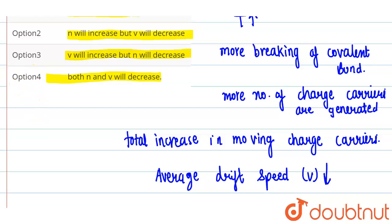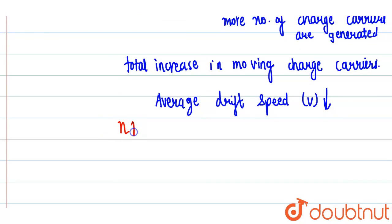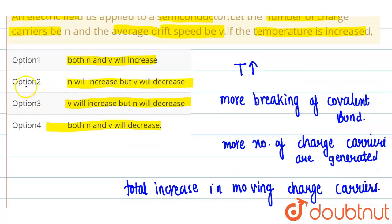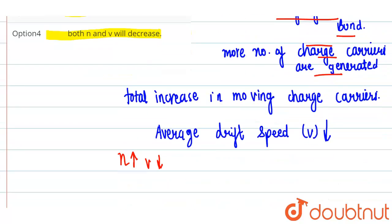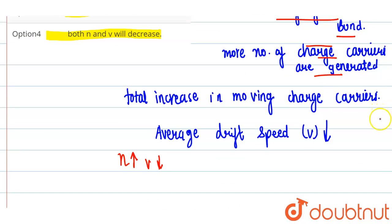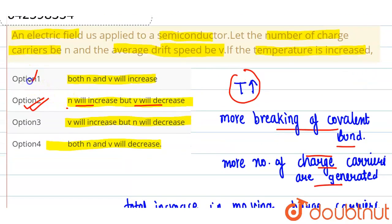Since the number of charge carriers n will increase but the drift velocity v will decrease, the correct option is 2: n will increase and v will decrease. n increases because of more breaking of covalent bonds when temperature is increased. And since the number of charge carriers increases, the probability of collision with the lattice atoms increases, therefore average drift velocity decreases. So option 2 is correct; options 1, 3, and 4 are incorrect.